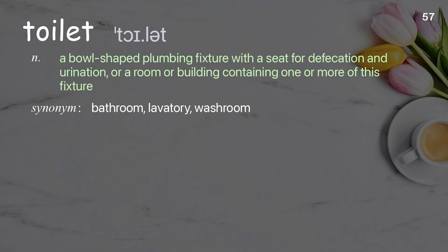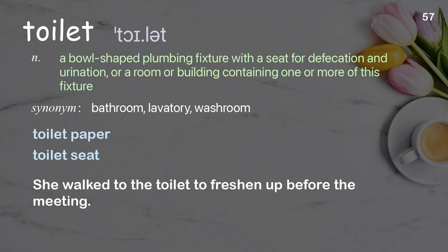Toilet: A bowl-shaped plumbing fixture with a seat for defecation and urination, or a room or building containing one or more of these fixtures. Examples: toilet paper, toilet seat. She walked to the toilet to freshen up before the meeting.